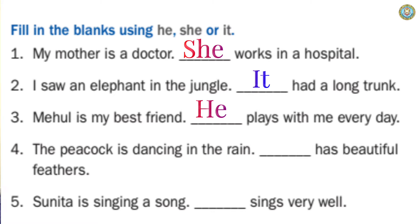Look at number four: 'The peacock is dancing in the rain.' Peacock is a name of a bird. In place of bird, which word do you write - he, she, or it? It! Very good. 'It has beautiful feathers.' The answer is I-T, it.